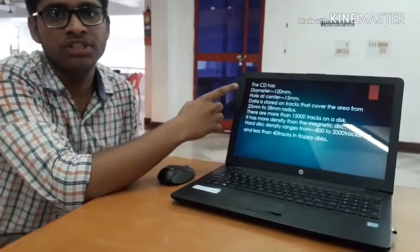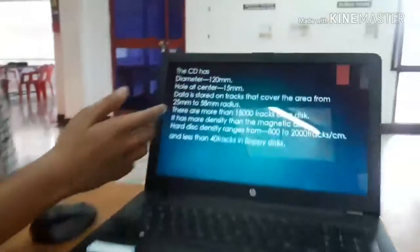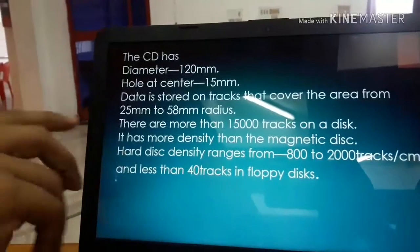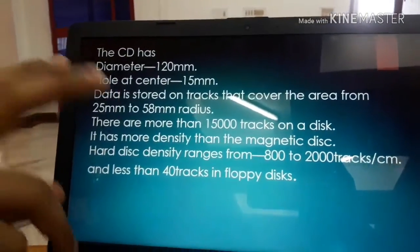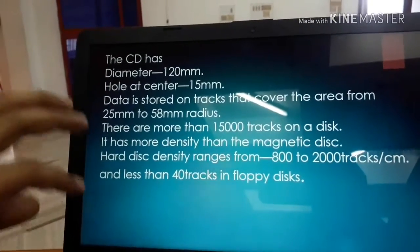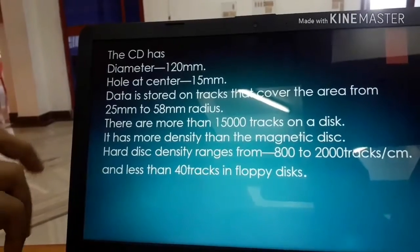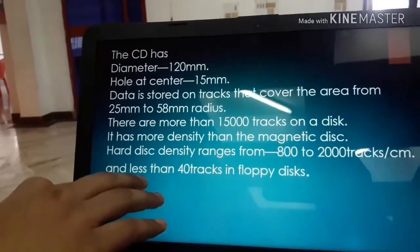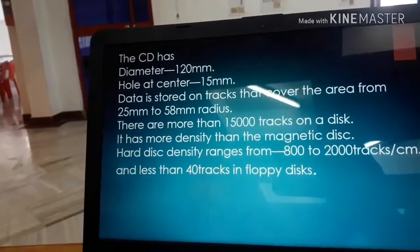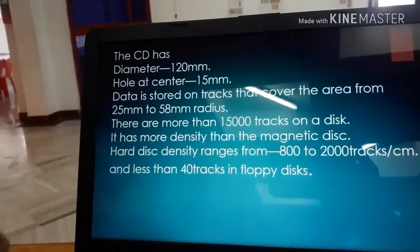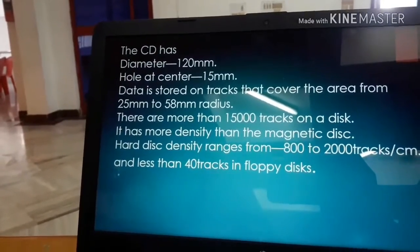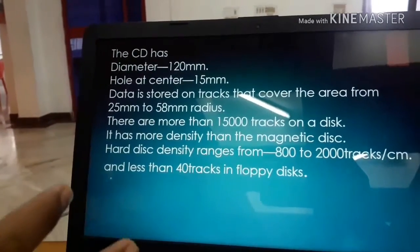Here we can see the overall structure of the CD. The diameter of the CD is 120 mm and the hole at the center is 15 mm. Data is stored in tracks covering the area from 25 mm to 58 mm. There can be continuous records of up to 800 to 2000 tracks per centimeter of data. The CD is very useful for storing data.